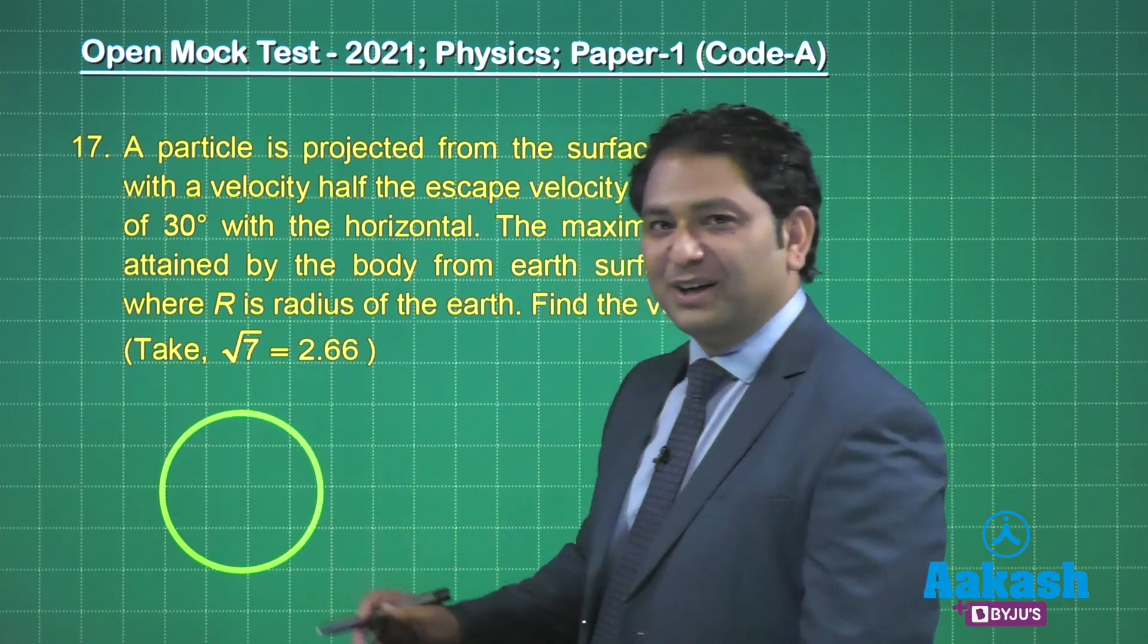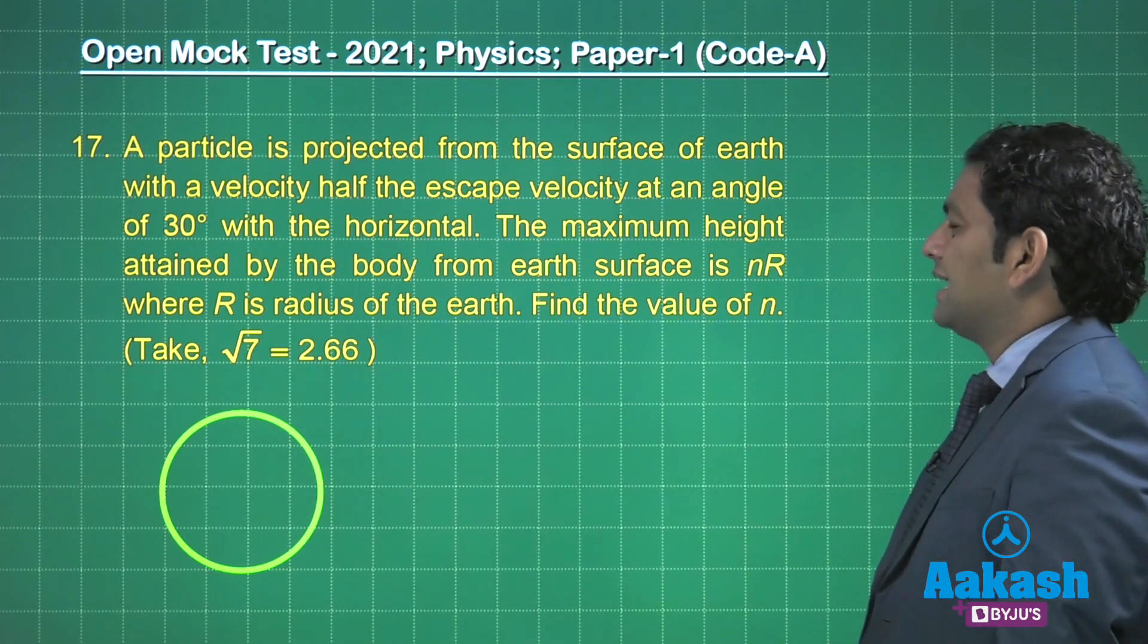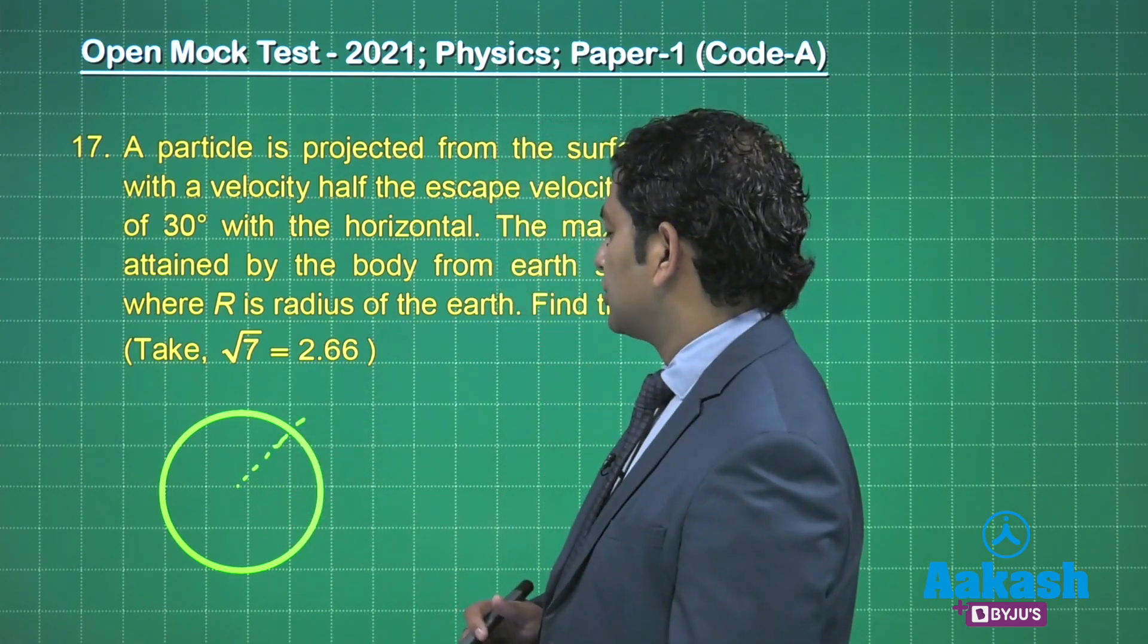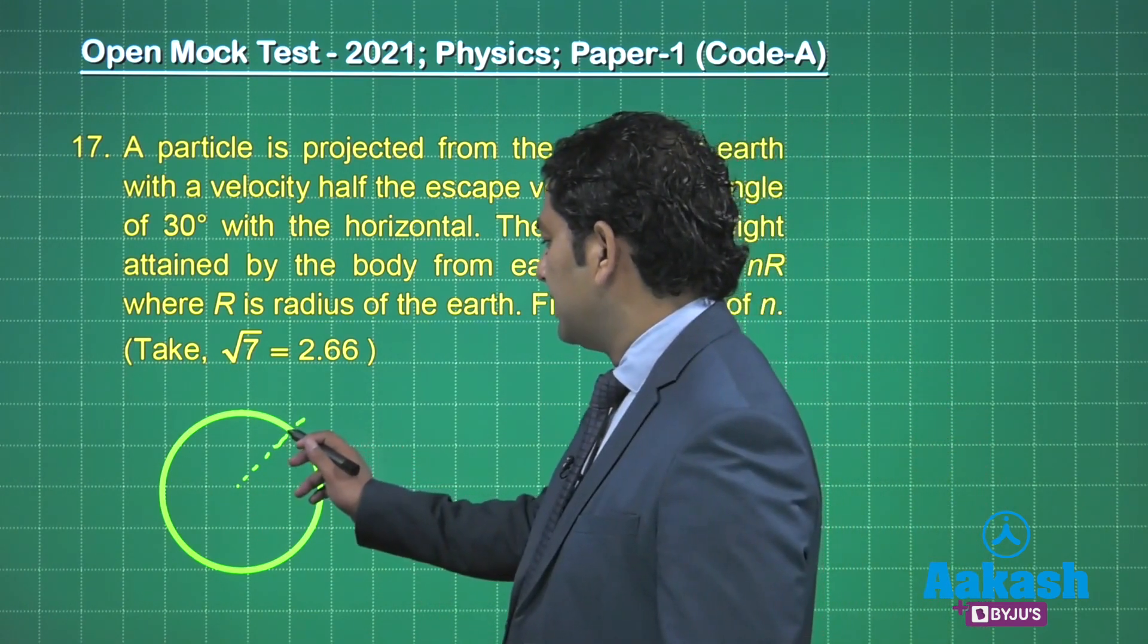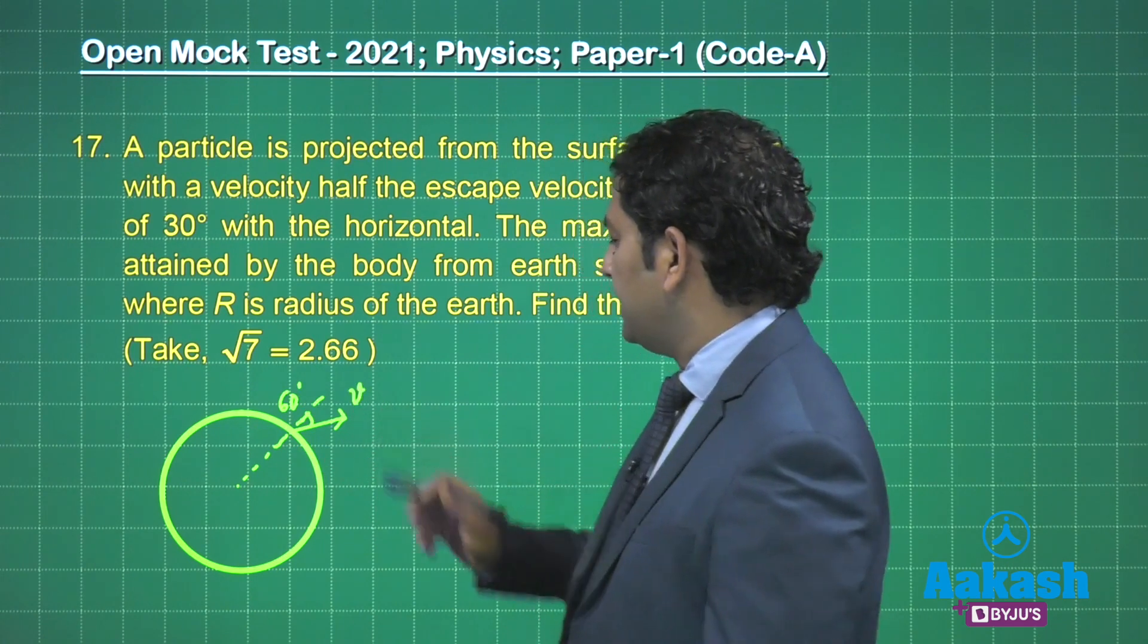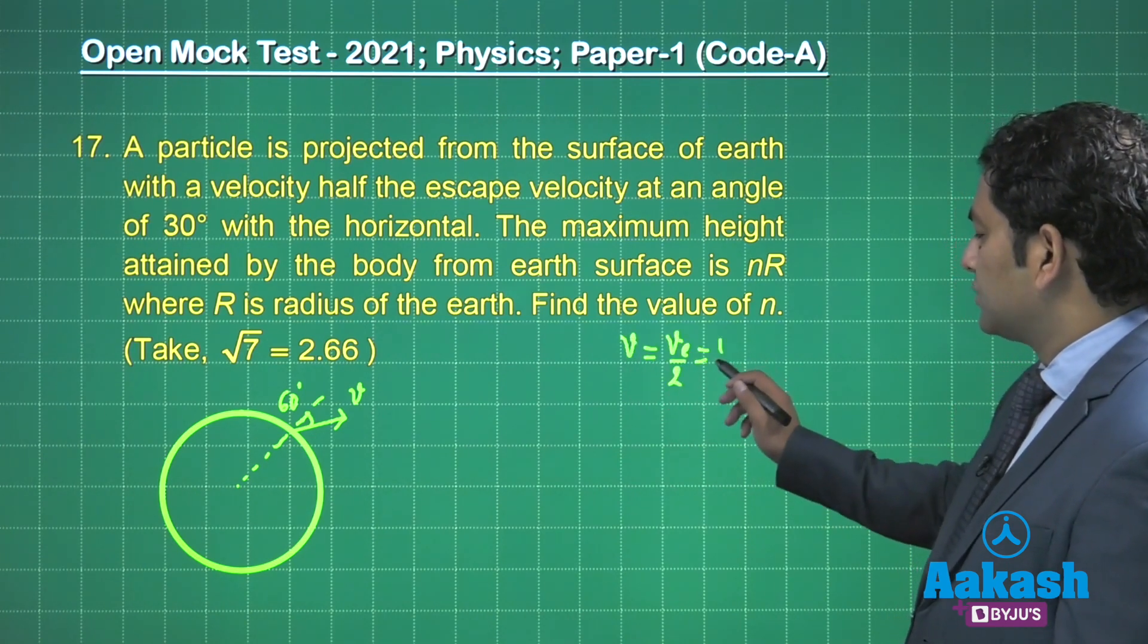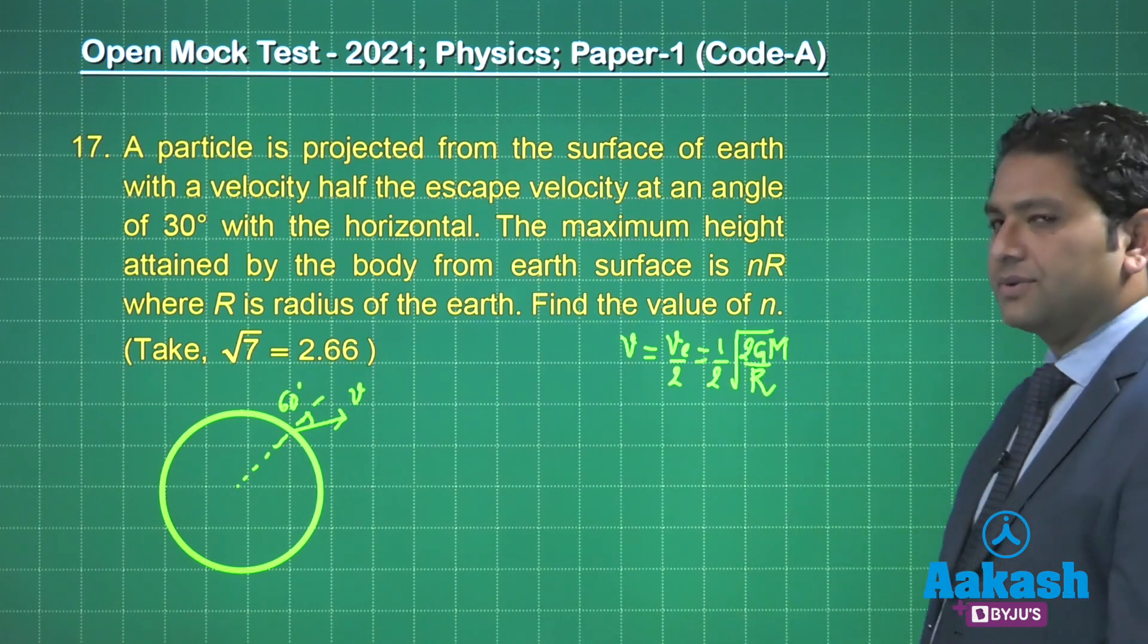All right. Now what does it say? And even let me shift Earth here. It's a big statement, shifting Earth. But all right. A particle is projected from the surface of Earth with a velocity half the escape velocity at an angle 30 degree with the horizontal. That means at an angle, if I take it here, that's going to be 60 degree with the vertical, right? So here, here, this angle is 60 degree, and it is projected with a speed v. And what is v? The value of v is half the escape velocity, v_e by 2. So that is 1/2 √(2gm/R). That's how it goes.